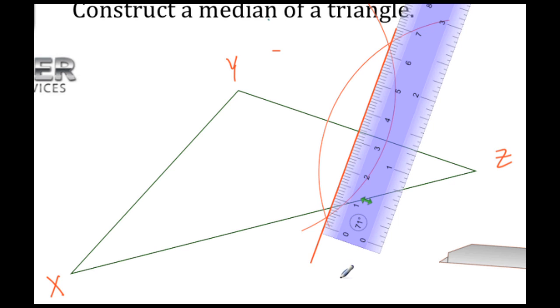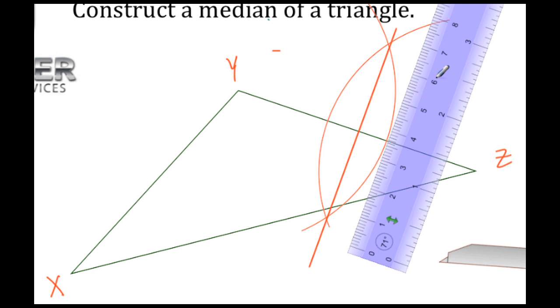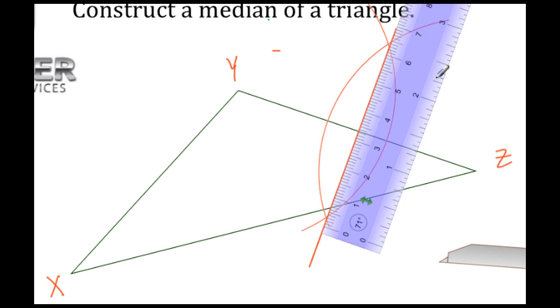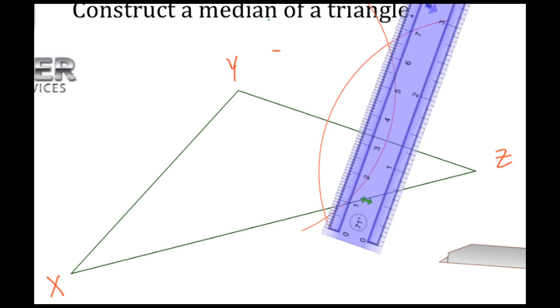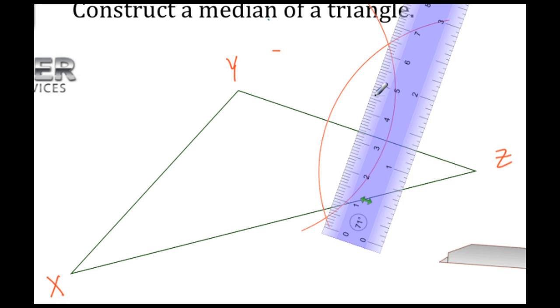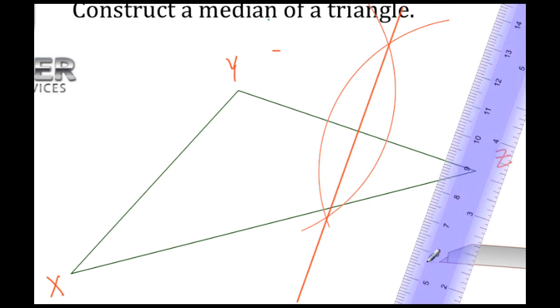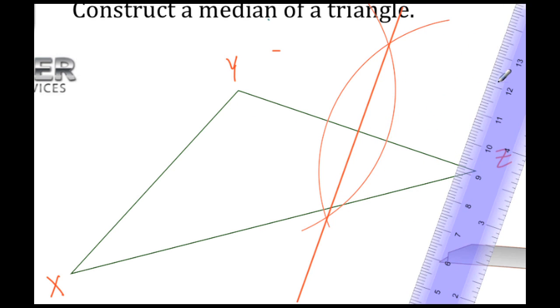Now let's draw the segment or the line that intersects those two points. All right, that's a little off, so I want to redraw that to make this as precise as possible. Let's give that a shot. All right, I think that's better.